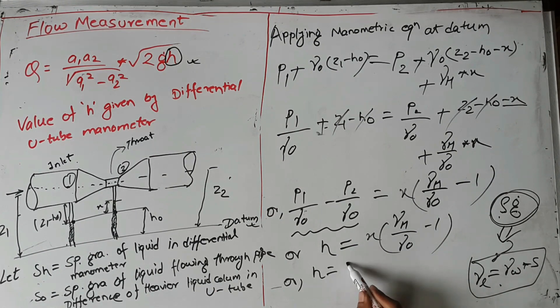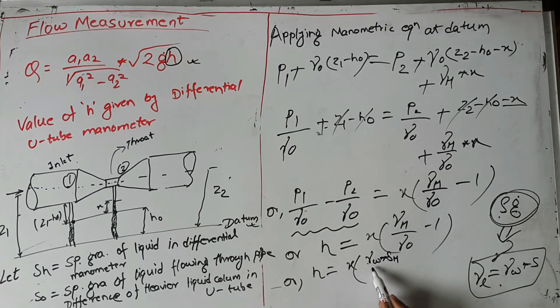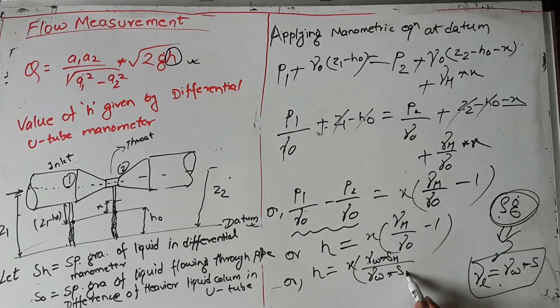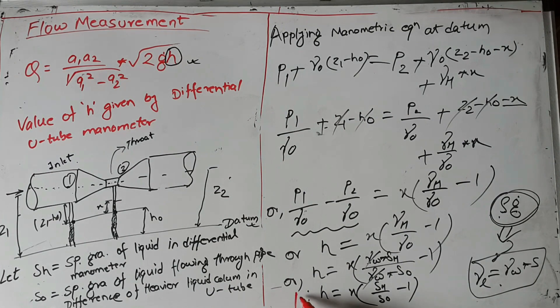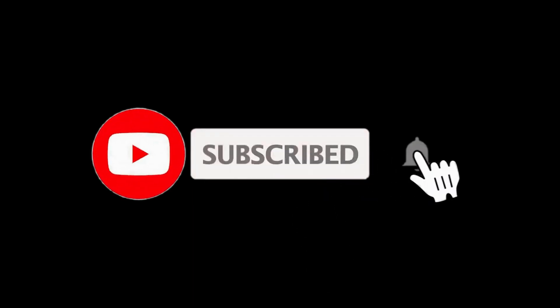Since gamma of any liquid equals gamma of water times the specific gravity of that liquid, we substitute: gamma_H equals gamma_water times Sh, and gamma naught equals gamma_water times S0. The gamma_water terms cancel out, and therefore we obtain H equal to X times (Sh/S0 minus 1). This is the value of the differential head obtained through the manometer fitted with the venturimeter.